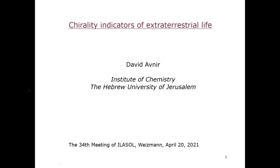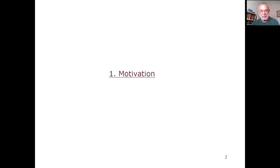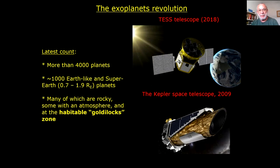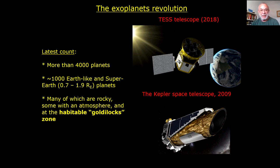Let me start with the motivation for this topic. I'll do it very briefly because most of you are familiar with these motivations. First of all, we are in the middle of the exoplanet revolution — in my mind, perhaps the most important revolution since the time that Galileo aligned his telescope to Jupiter. Now that we have more than 4,000 planets, many of them Earth-like, suddenly the prospect of extraterrestrial life is not science fiction anymore.